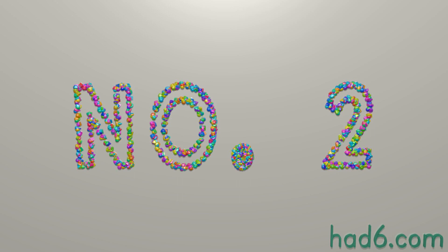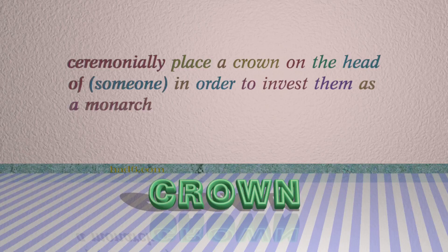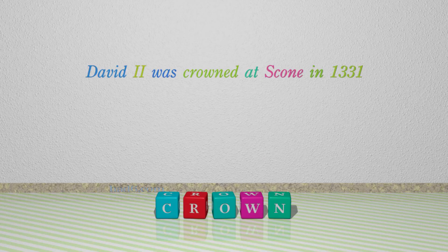Number 2: Crown, which means to ceremonially place a crown on the head of someone in order to invest them as a monarch. For example: David the Second was crowned at Scone in 1331.